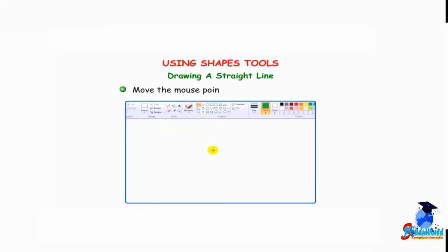Move the mouse pointer to the drawing area. Press and hold down the left mouse button and drag the mouse pointer on the drawing area. Note that a line is drawn on the screen while dragging the mouse. Release the mouse button when you want to end the line.